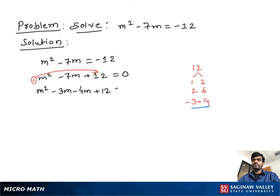So we can write m square minus 3m minus 4m plus 12 equal to 0. Now from this pair, we take m as common. We have m minus 3. From this pair, we take negative 4 as common. We get m minus 3, all equal to 0.